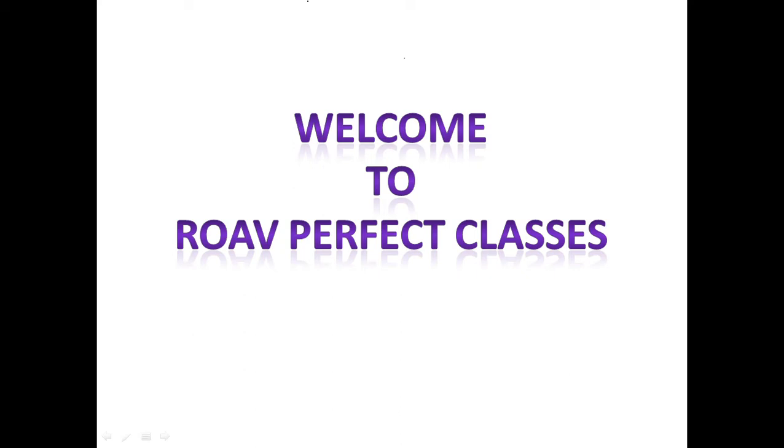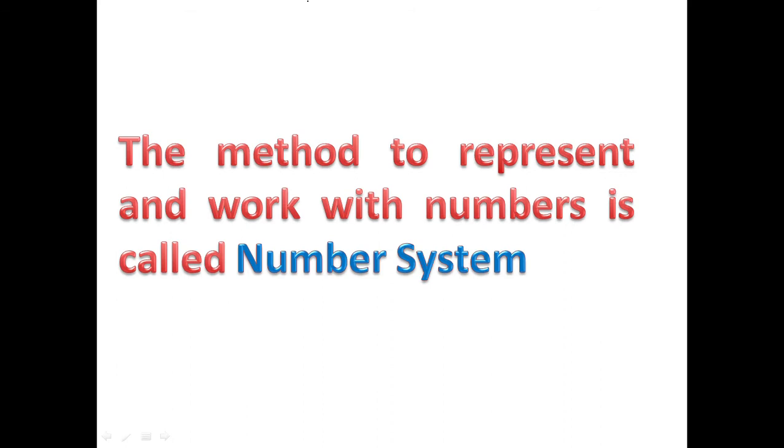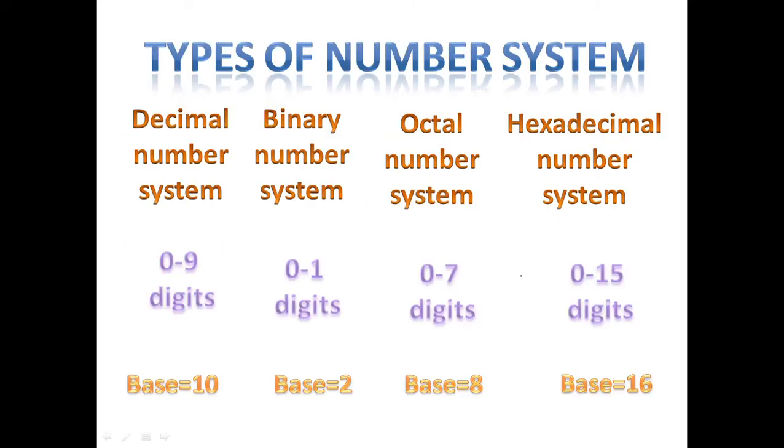Welcome to Raw Perfect Classes. Today's topic is number system. What is a number system? The method to represent and work with numbers is called a number system. There are different types of number systems. First is the decimal number system.